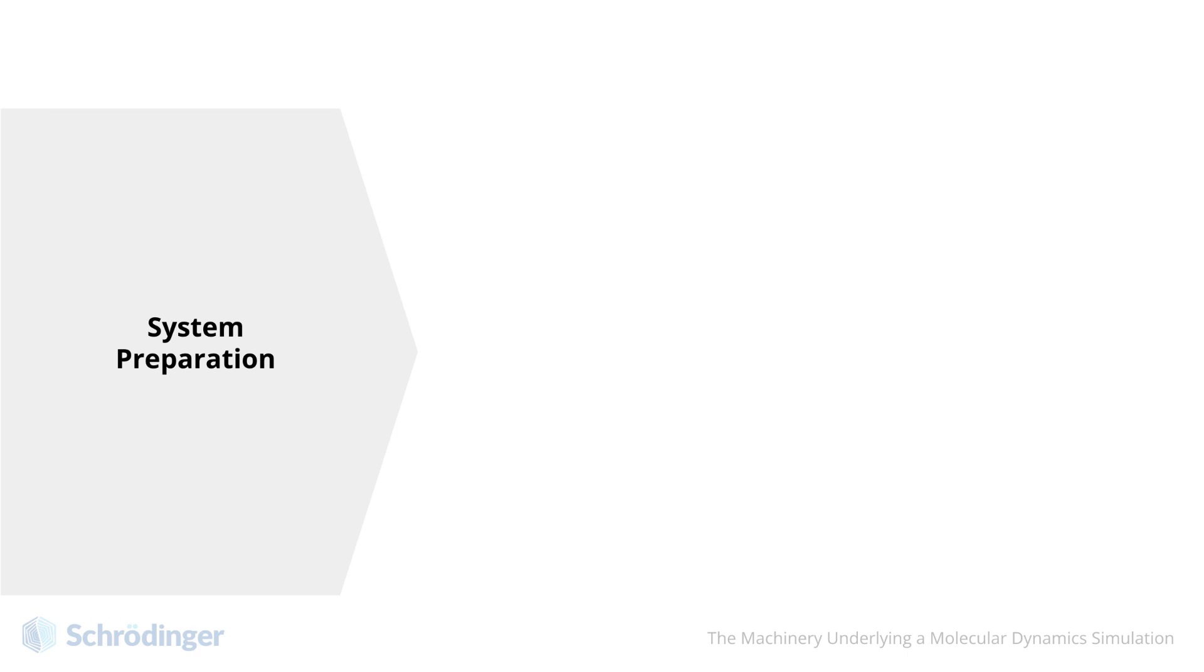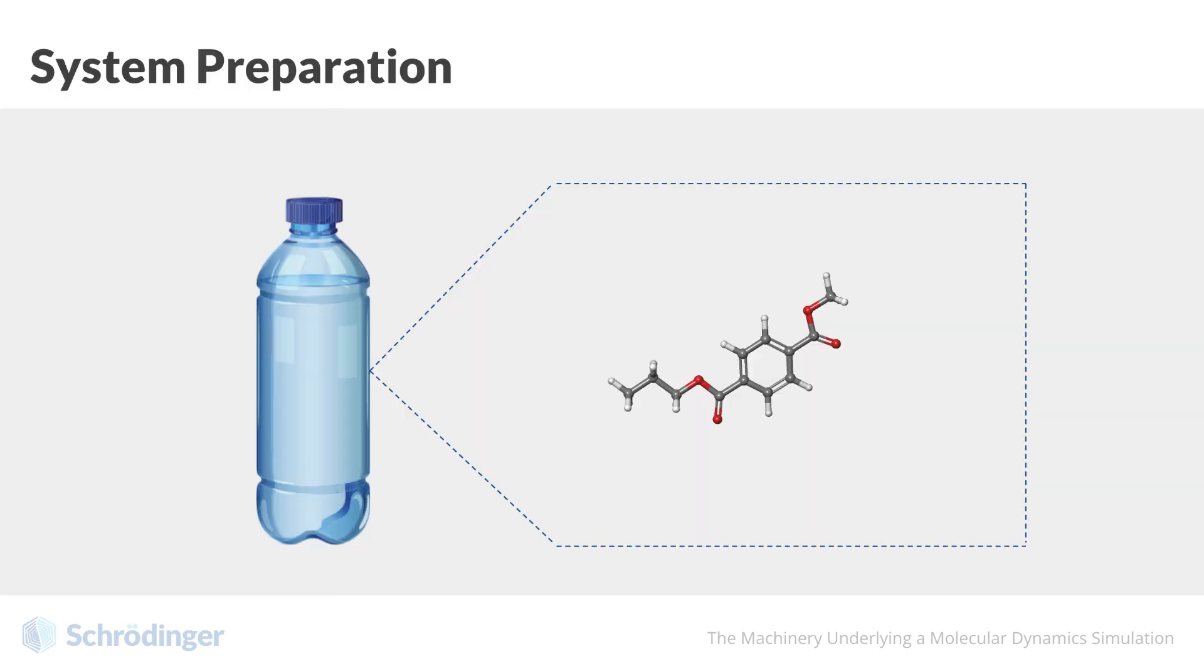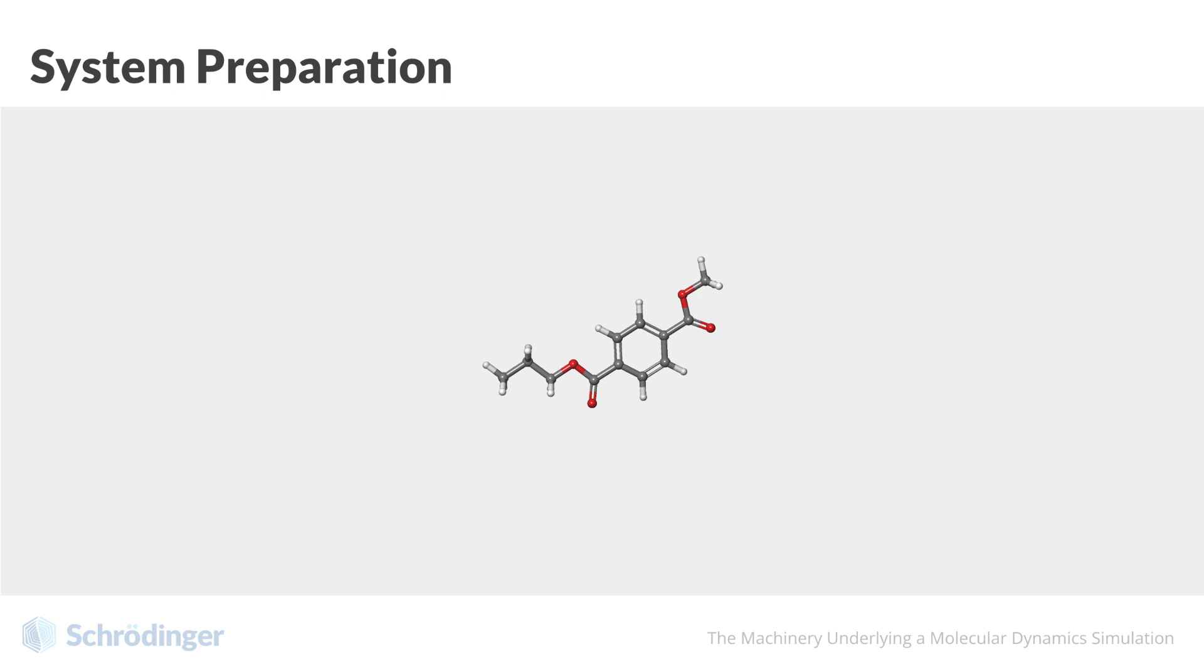Let's carry on with this example of PET. Our real system is typically much larger than a reasonable scale to simulate. We do not simulate the entire bottle. If we simulate a molecule by itself, we can capture how it behaves in a vacuum, but not the influence of other surrounding molecules.